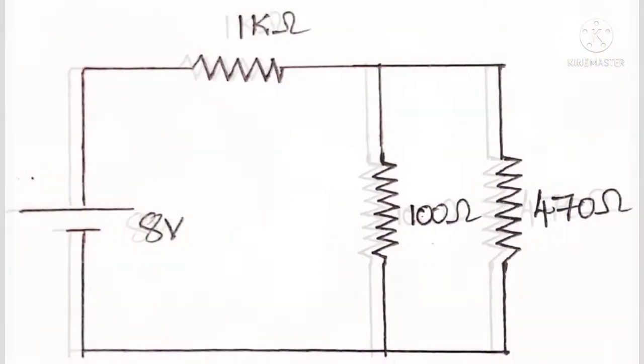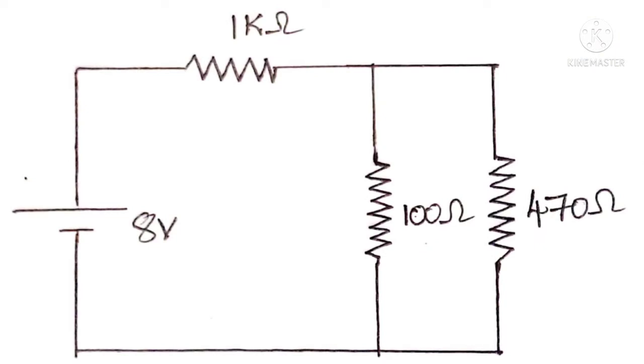Now considering the given circuit once again, we can observe that the excitation here in this circuit is nothing but 8 volts voltage source and the response can be anything. Either the voltage across various resistors or the current flowing through the resistor, it can be anything. But here, in this problem, we are considering the current flowing through 470 ohms as the response. So the excitation is 8 volts and the response is current through 470 ohms.